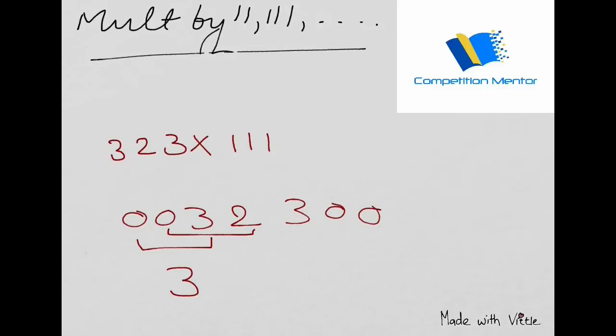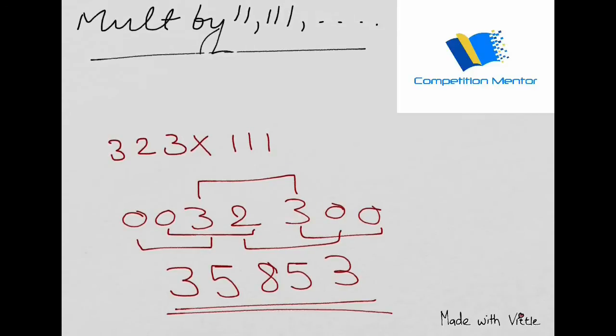Zero plus three plus two is five. Three plus three plus two is eight. Two plus three plus zero is five. And then these three, three, three.